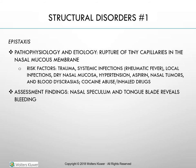Epistaxis, or nosebleed, is a common occurrence. It is not usually serious but can be scary. Nosebleeds are the rupture of tiny capillaries in the nasal mucous membrane, occurring most commonly in the anterior septum, referred to as Kiesselbach's plexus. Risk factors associated with nosebleeds include trauma, systemic infections such as rheumatic fever, local infections, dry nasal mucosa, hypertension, use of aspirin, nasal tumors, and blood dyscrasias. Epistaxis resulting from hypertension or blood dyscrasias is likely to be severe and difficult to control. Those who abuse cocaine or other inhaled drugs may have frequent nosebleeds. Foreign bodies in the nose and deviated septum contribute to epistaxis, along with forceful nose blowing and frequent or aggressive nose picking.